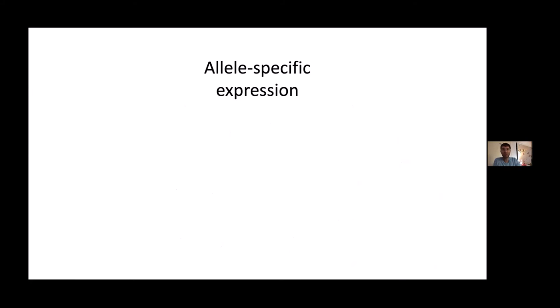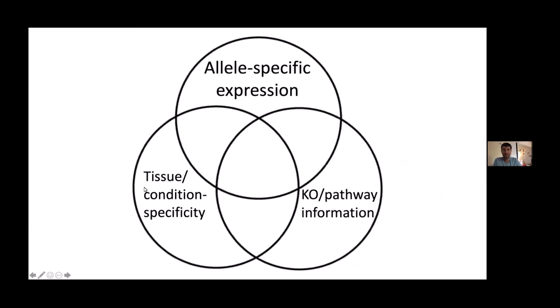Looking at all three examples together, as well as others I haven't had time to mention, allele-specific expression can be a very powerful approach for studying the genes underlying complex traits. But it's not enough by itself — you need to intersect it with other aspects like tissue and condition specificity, as we did with the flies, or knockout and pathway information. At the center of these intersections is where we get a small number of candidate genes that we can actually test. This approach is quite a bit easier and more high resolution than methods like QTL mapping.